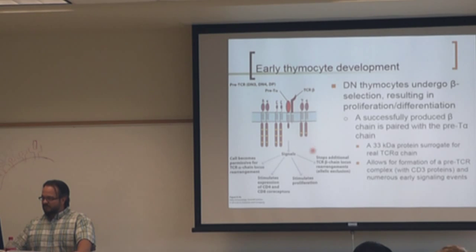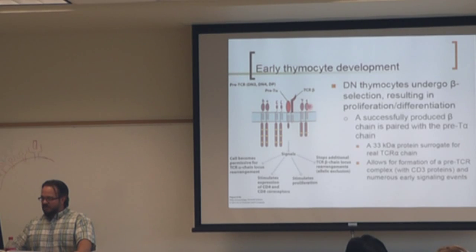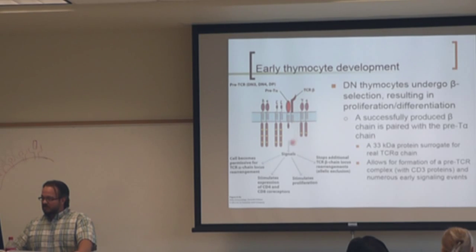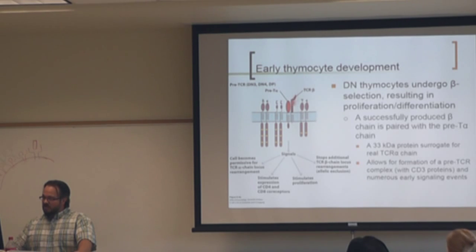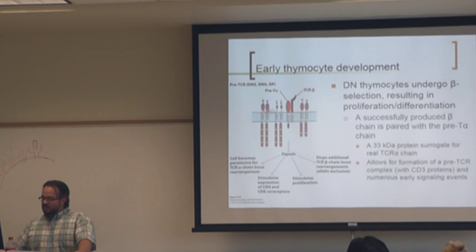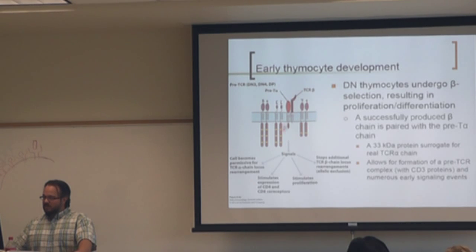The CD3 molecules — the various components like zeta, gamma, epsilon, and delta — are all just part of the CD3 complex that associates with the T cell receptor. Your alpha and beta don't have much intracellular signaling capacity themselves; they associate with the CD3 molecules, which once bound will signal through their ITAMs and send signals downstream. It's a similar mechanism to B cells. These are your signaling molecules that associate with the receptor.